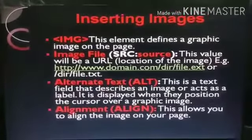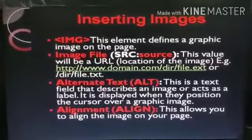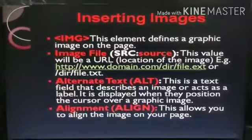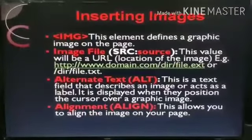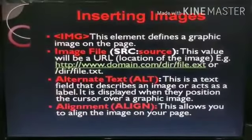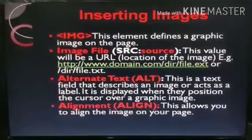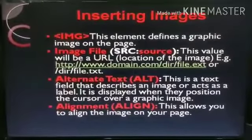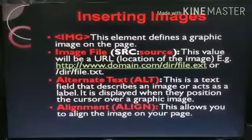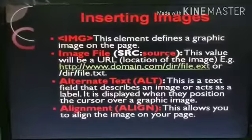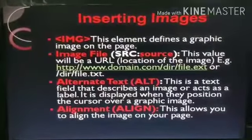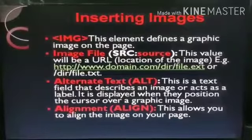The next attribute is the alignment attribute — align. In this attribute, we give the alignment value for where we want to display our image. It has certain values like top, middle, bottom, left, and right. If the image is displayed with a text line, that image is called an inline image. Inline image means an image within the text lines. For inline images, we use three alignment values: top, middle, and bottom.